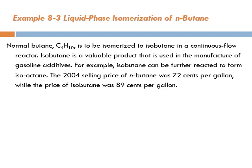Isobutane is a valuable product that is used in the manufacture of gasoline additives. For example, isobutane can be further reacted to form isooctane. The 2004 selling price of n-butane was 72 cents per gallon, while the price of isobutane was 89 cents per gallon. So there's a margin there, an opportunity for making money.